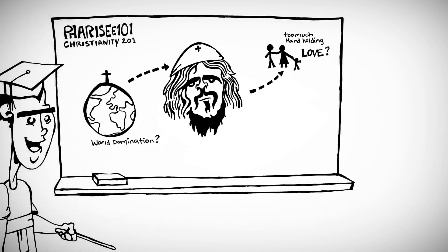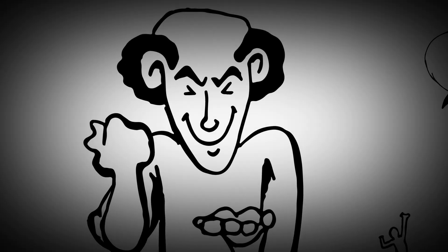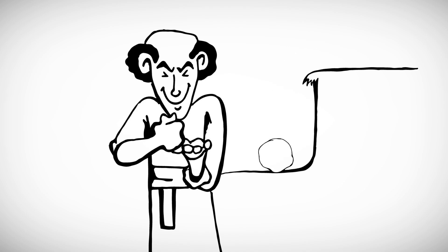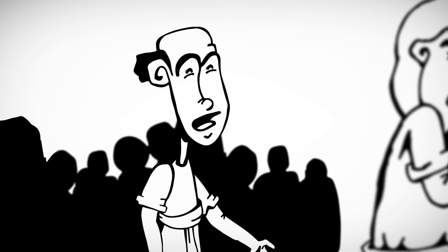That uprising was forming under this man named Jesus. And Saul planned to stop him. He figured the best way to overthrow this regime was by killing off his followers. We first see Saul show up on the scene at a public execution.